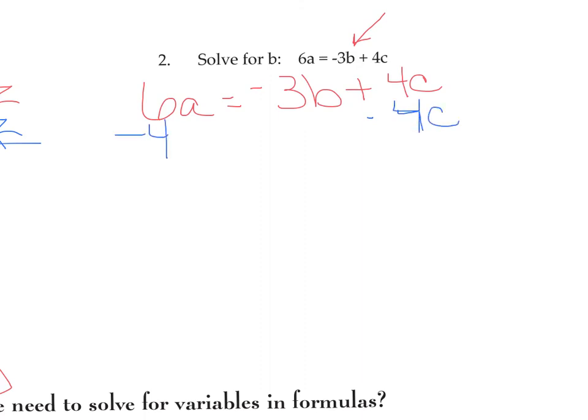Both sides. That will cancel on the right. And we have negative 3B left. On the left, remember, you're trying to subtract these and they're not like terms. So we're just going to have 6A minus 4C.